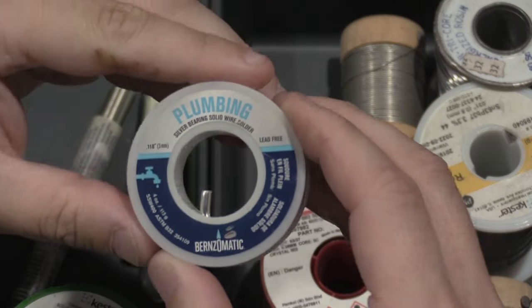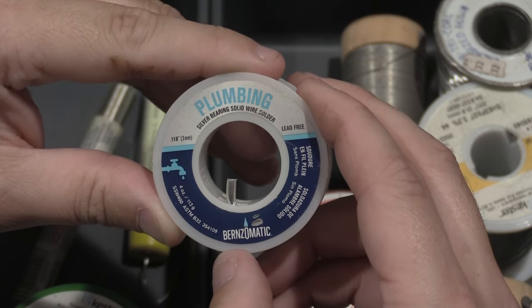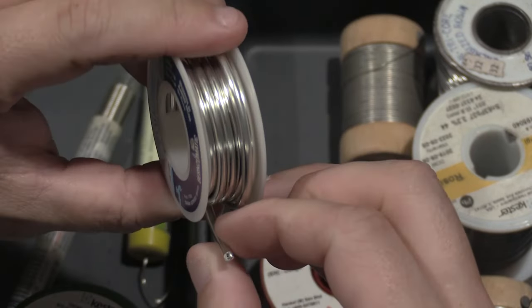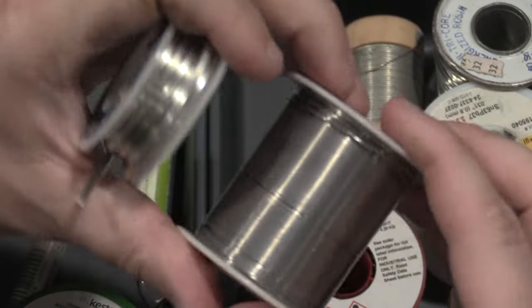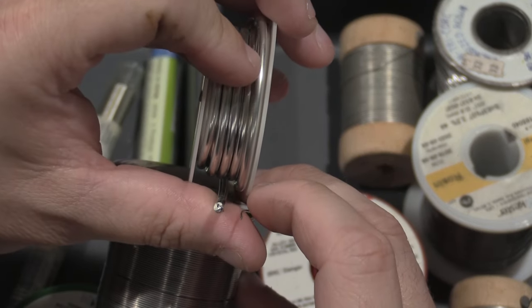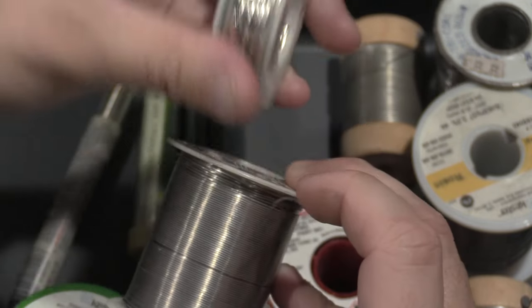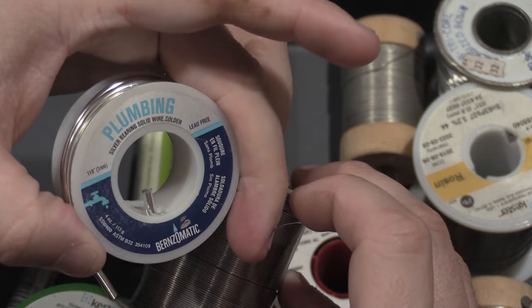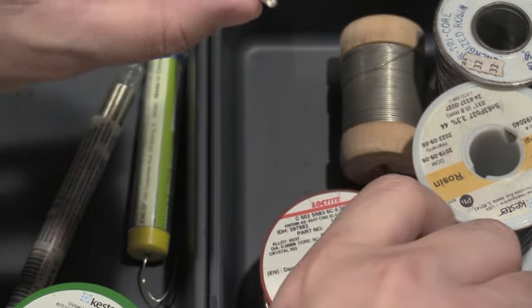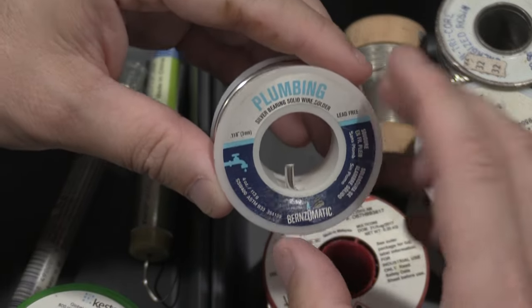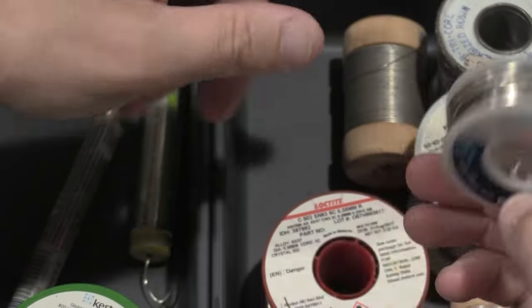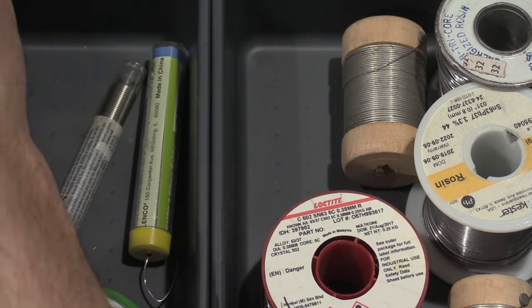Some of the rolls in this box are like this Bernzomatic plumbing solder. This is not to be used for electronics. First off, it's way too thick. This stuff is huge compared to the roll of solder I'm currently working with in the lab. Obviously trying to do surface mount stuff with this, even if it would work, isn't going to happen just by the wire diameter. Now the other problem is plumbing solder typically does not have flux in it.